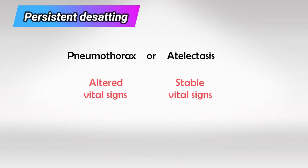Pneumothorax often compresses the mediastinum, which alters the vital signs — mainly blood pressure and heart rate. If these vitals are altered, the patient is likely to have pneumothorax over atelectasis.